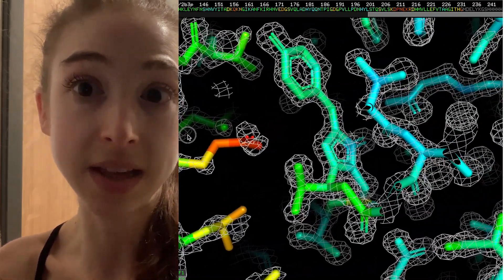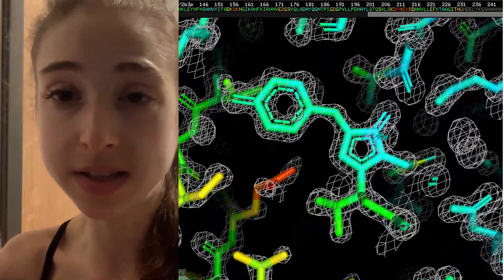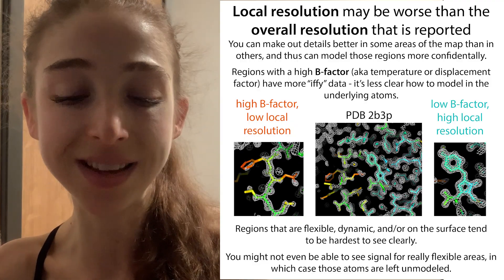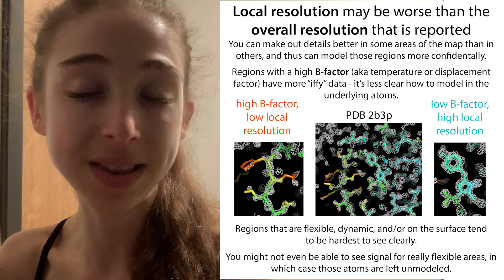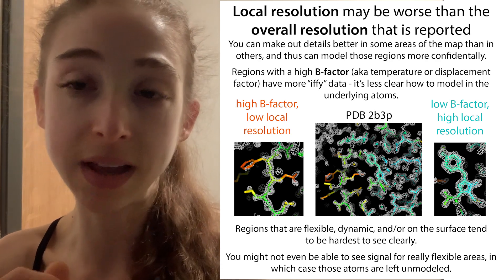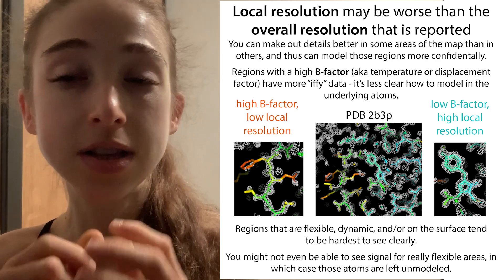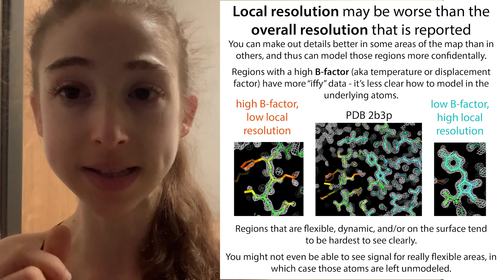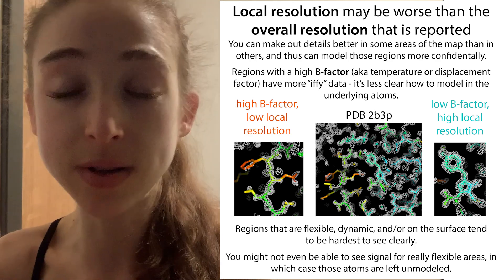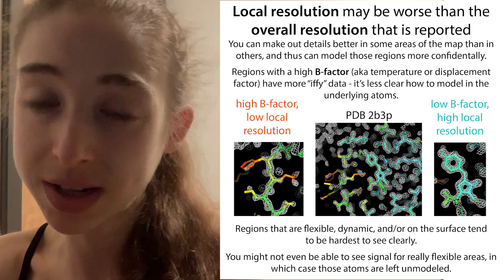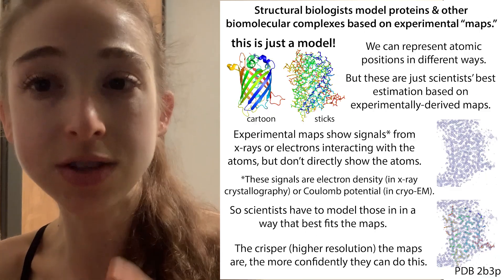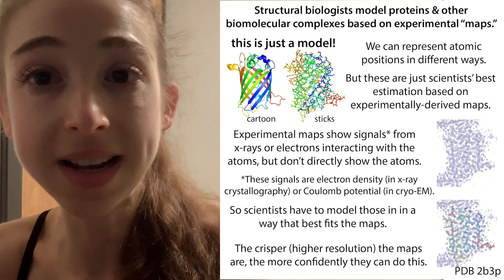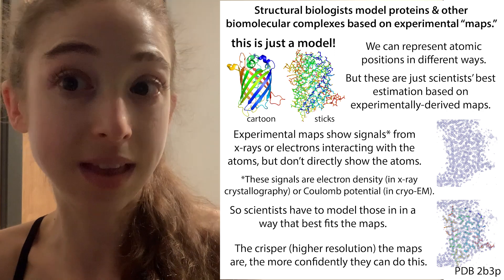Sometimes regions are so flexible that you can't even see them in the map. If you can't see them, you can't model them accurately — so those places are left out of the model entirely, appearing as unmodeled regions. This is really common in loopy regions and at the ends of proteins, like the N-terminus and C-terminus. Even if those atoms are physically present, you won't see them in the model.